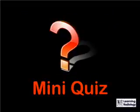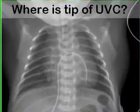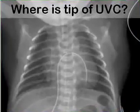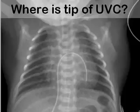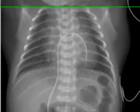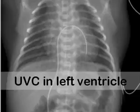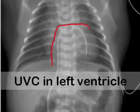It's time for the mini quiz — get ready to pause your computer or MP3 player. Where is the tip of this umbilical venous catheter? The catheter extends up the vena cava, into the right atrium, across the interatrial septum, into the left atrium, and then winds up in the left ventricle.